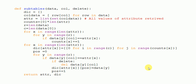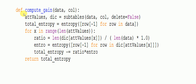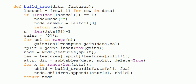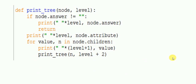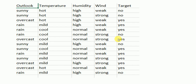The subtables code and entropy function are shown here. The entropy function is used to calculate the entropy values. This part of the code is used to calculate the gain of the function. The build tree function constructs a tree, calls the nodes, and finalizes the tree. The print tree function prints the tree according to the calculated nodes, with different levels representing the dataset features.